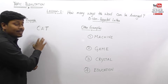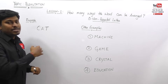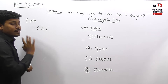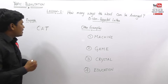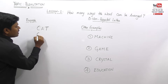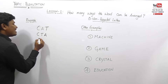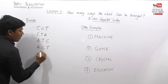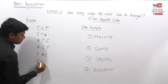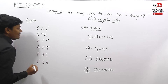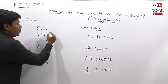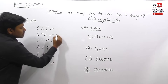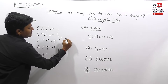First, let's learn the traditional method, then we can apply the permutation concept. The word CAT can be arranged as: CAT, CTA, ATC, ACT, TAC, and TCA. So how many ways did we write the word CAT? One, two, three, four, five, six — totally there are six ways to write this word CAT.